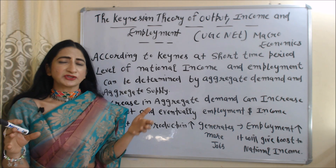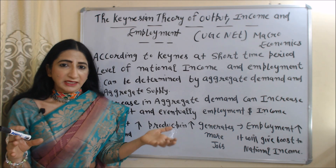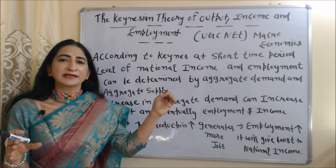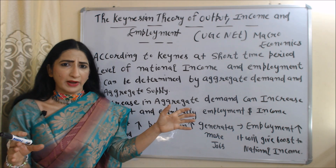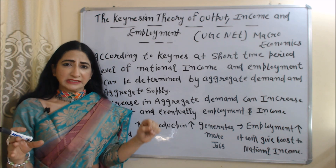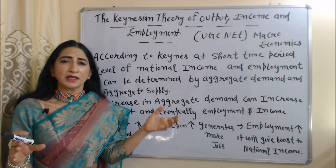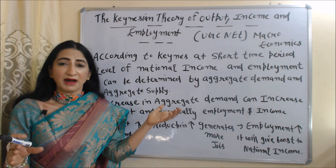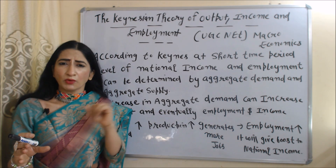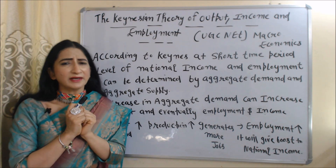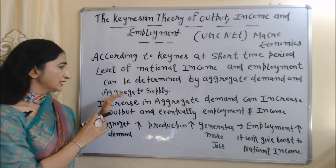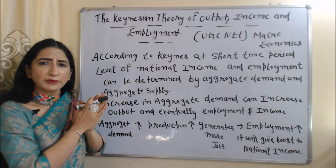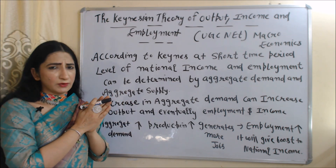According to this theory, in the short time period, income and employment can be determined by aggregate demand and aggregate supply. Aggregate demand is very important because an increase in aggregate demand can increase output, and eventually employment and income will also increase.